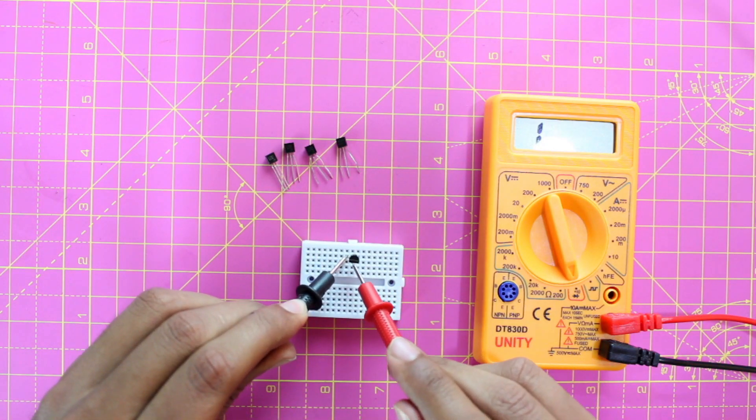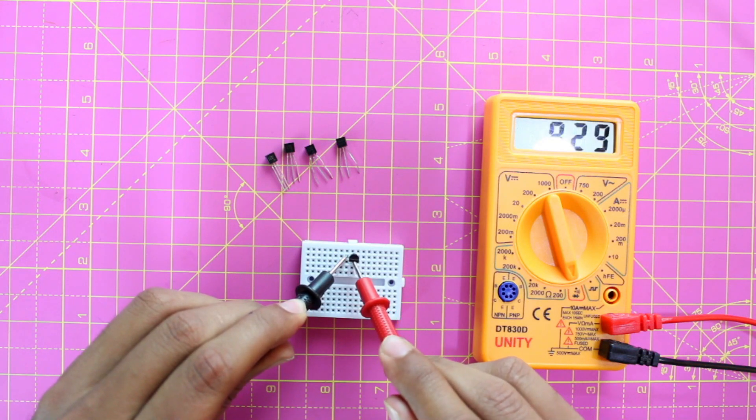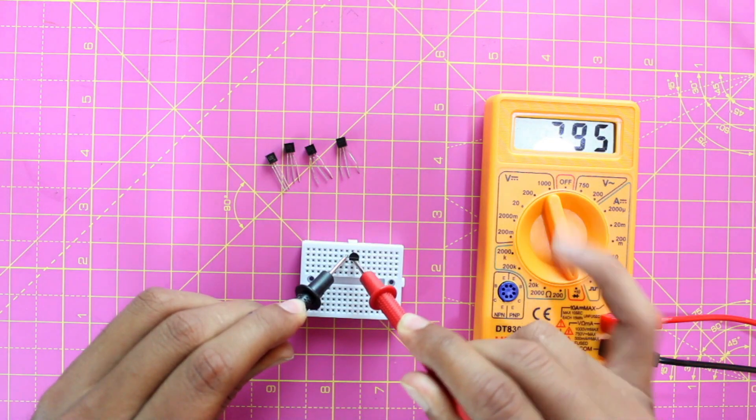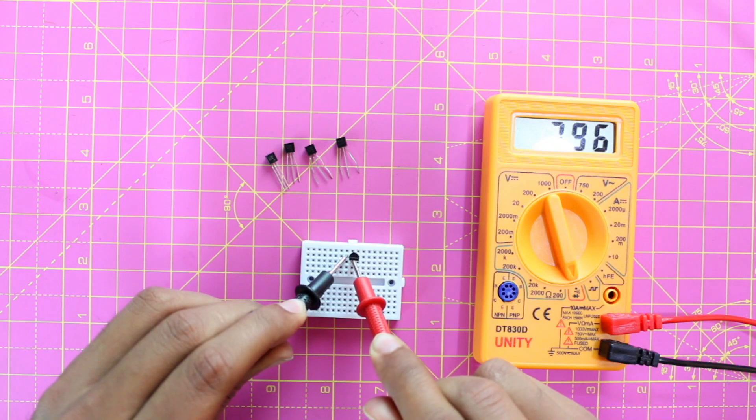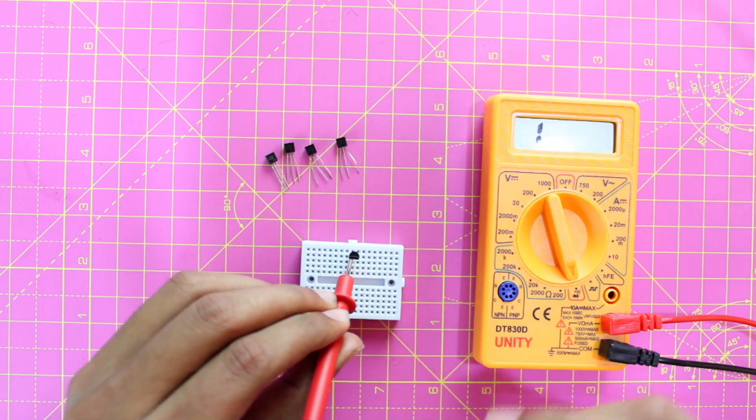So I'll place my negative probe here and positive probe here, and as you can see, I'm already getting a voltage drop of 795 or 796 millivolts. So it means the first two pins have no problem and I know the center pin is negative now.